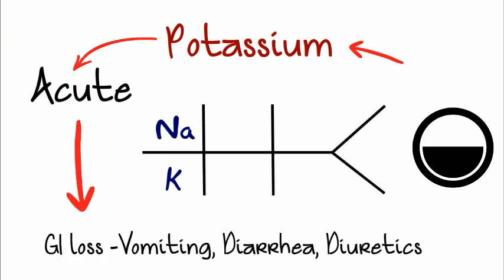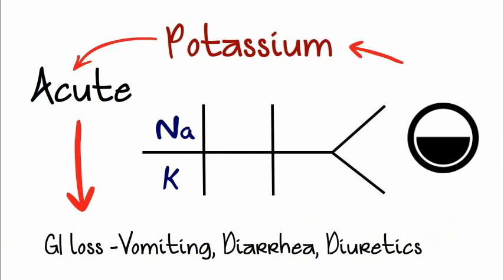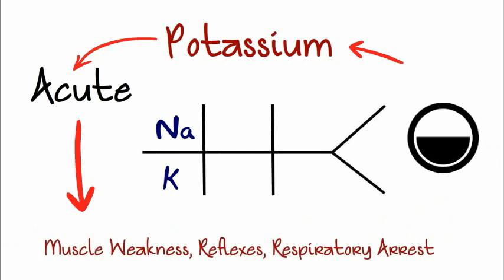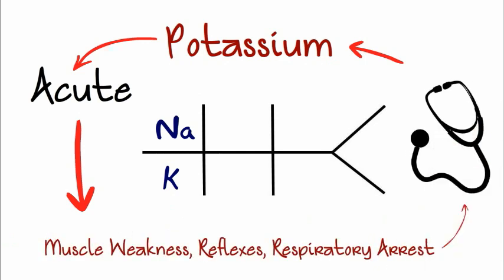Low is acute, and usually is the result of fluid loss, like GI, diarrhea, diuretics, like Lasix. And this is acute, since it causes muscle weakness, decreased reflexes, and potentially respiratory arrest.